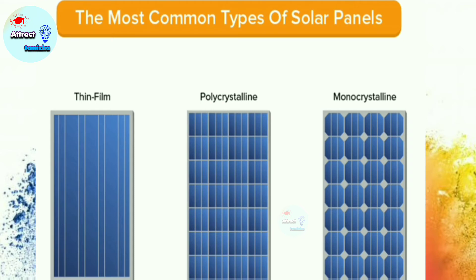Most people use polycrystalline panels. Why? Because cost-wise they are less expensive. If we install the same place with a monocrystalline versus polycrystalline panel, the monocrystalline is higher cost and polycrystalline is lower cost. So cost-wise it is less, but we install it in the same place and it is efficient enough.